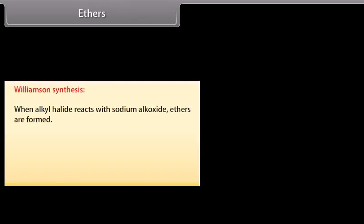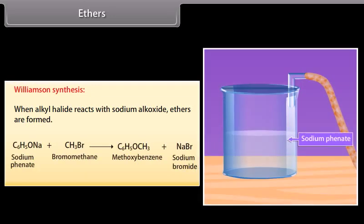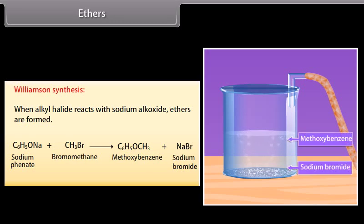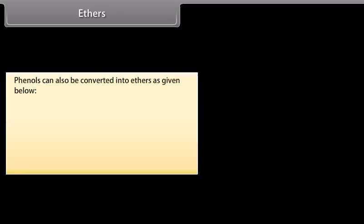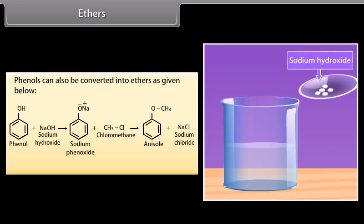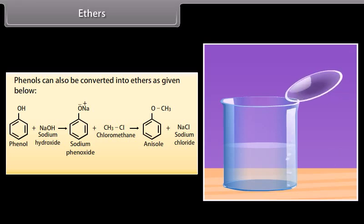Williamson synthesis: when an alkyl halide reacts with sodium alkoxide, ethers are formed. Bromomethane is mixed with sodium phenate and gives methoxybenzene and sodium bromide. Phenols can also be converted into ethers: on mixing sodium hydroxide into phenol, it forms sodium phenoxide, then on adding chloromethane it forms anisole and sodium chloride.